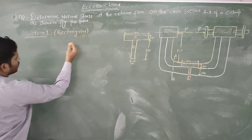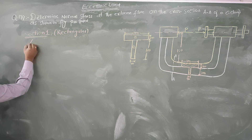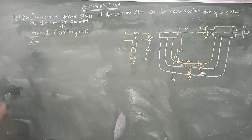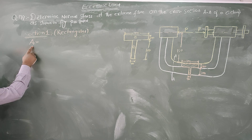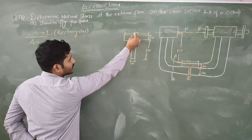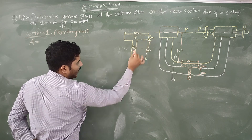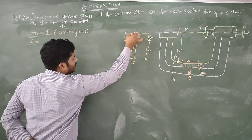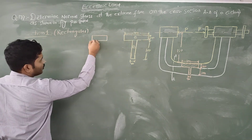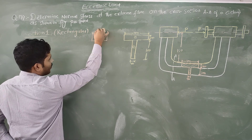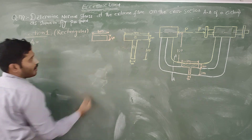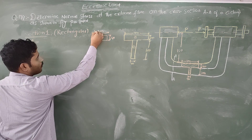We are using the formula to find out the area. For Section 1: Area A1 = Breadth × Depth. We have two sections so we will get two areas. For Section 1, breadth is 100 mm and depth is 40 mm.